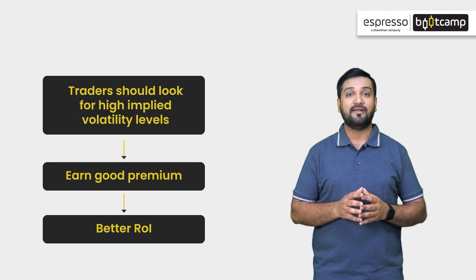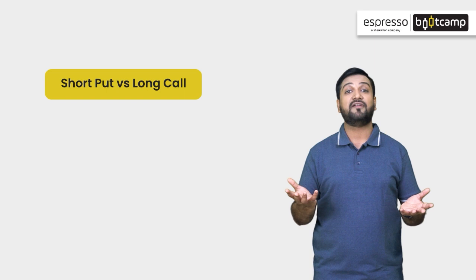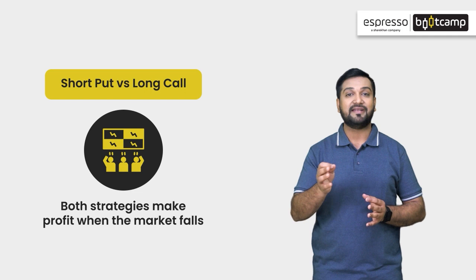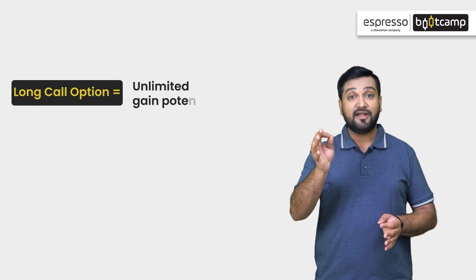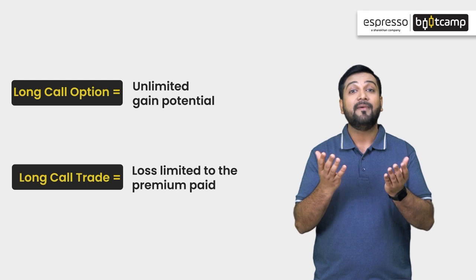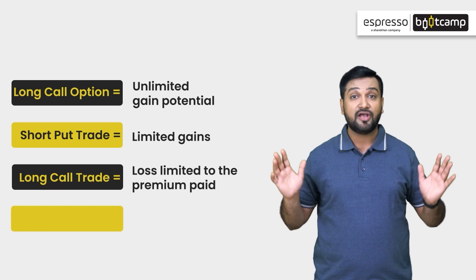Now let's see how short put strategy and long call strategy differ. In both strategies, you can earn profit when the market rises. But there is a fundamental difference: in a long call, profit is unlimited and your risk is limited to just the premium paid. In a short put, profit is very limited while the risk is unlimited.